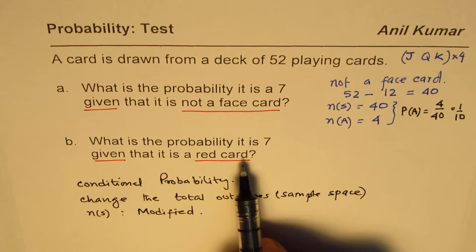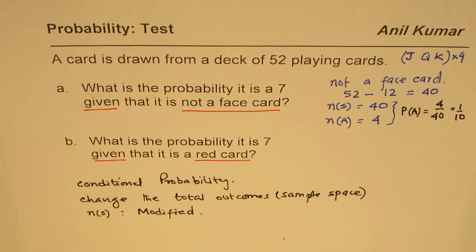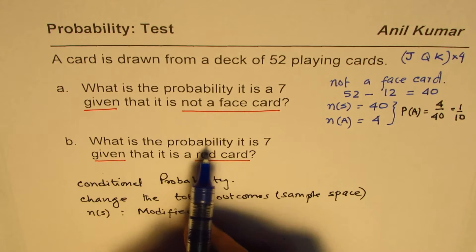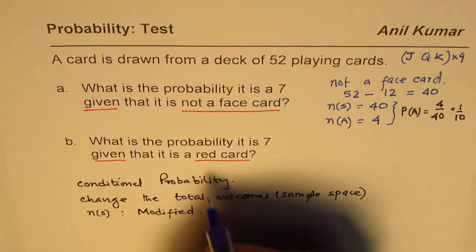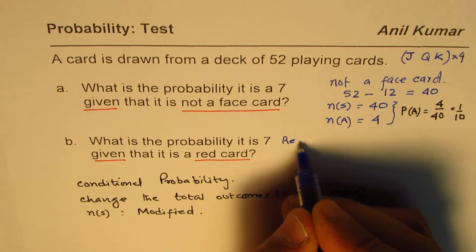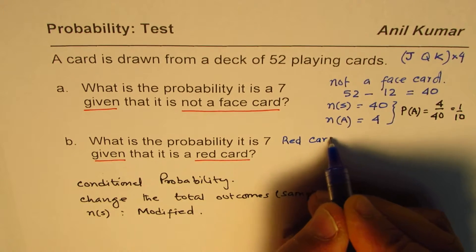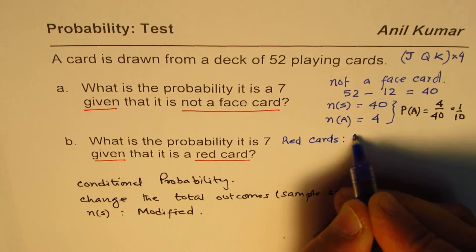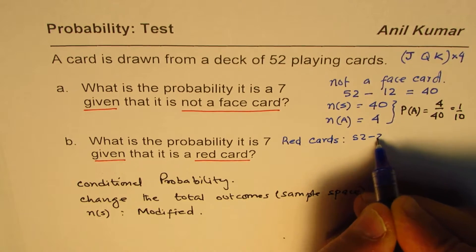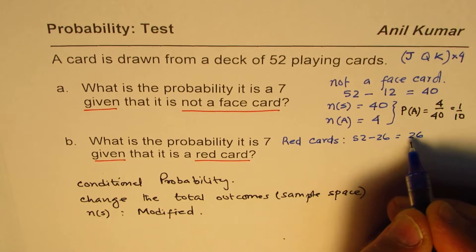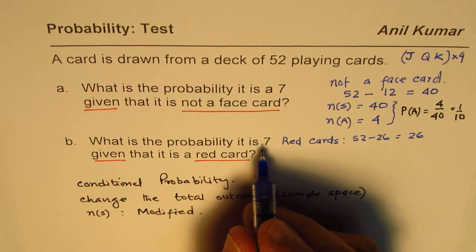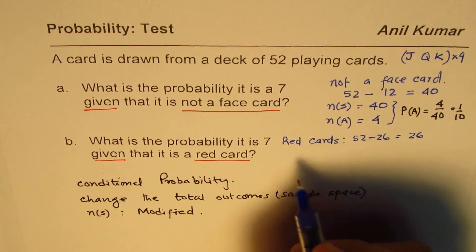I'd like you to apply the same strategy here and answer the next question. What is the probability it is 7 given that it is a red card? So how many red cards are there? As far as the red cards are concerned, half of them are red cards. You could also say 52 take away 26 which are black cards, so 26 are red cards, and number of sevens are four.